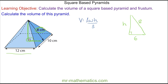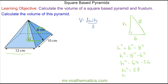Pythagoras' theorem tells us that the sum of the squares on the two shorter sides equals the square on the hypotenuse. So h squared equals eight squared minus six squared, which gives h squared equals 64 minus 36, so h squared equals 28. Taking the square root of both sides, the square root and the square cancel, so the perpendicular height is approximately 5.3 centimeters.